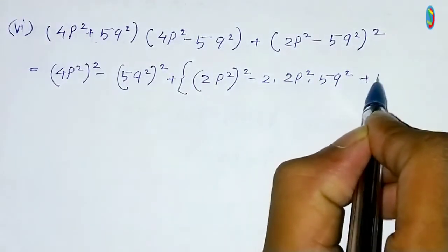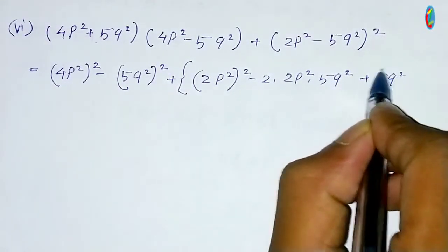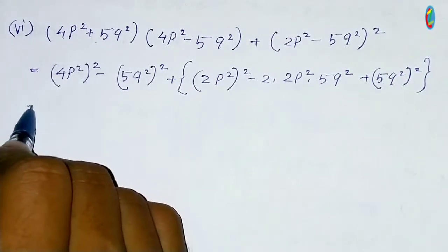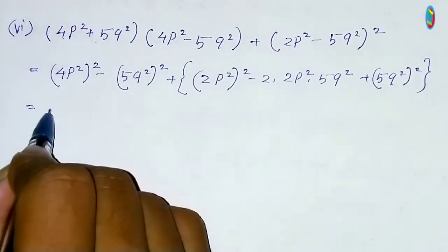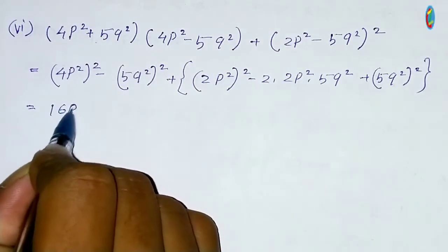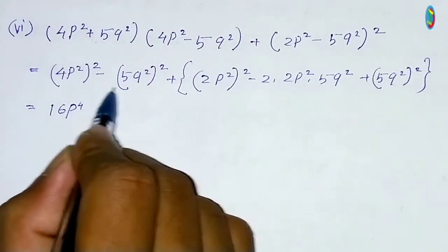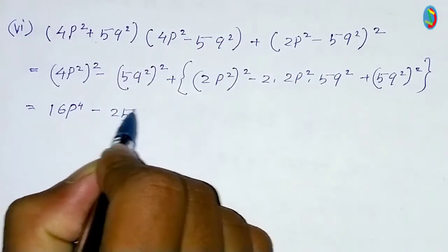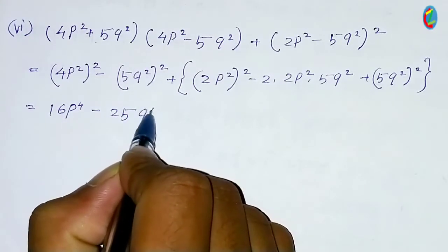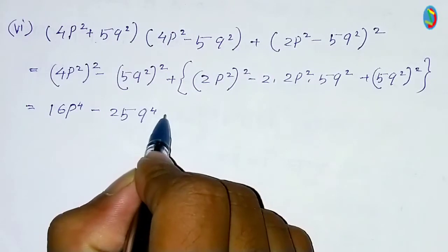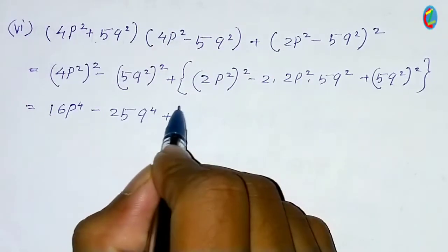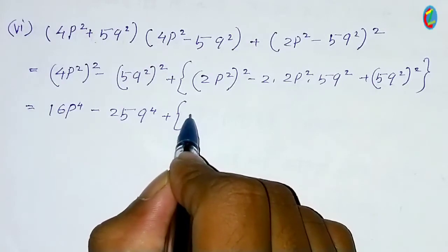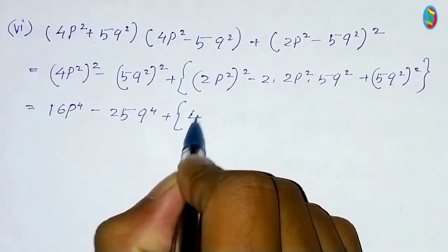Twice: (p squared + 5q squared) whole squared. We take (4p squared) whole square to be 16p to the power 4. We take (5q square) whole square to be 25q to the power 4. Twice (p squared) whole square will give 4p to the power 4.